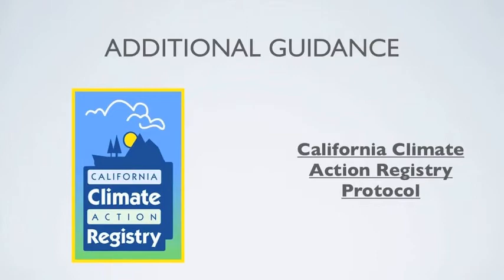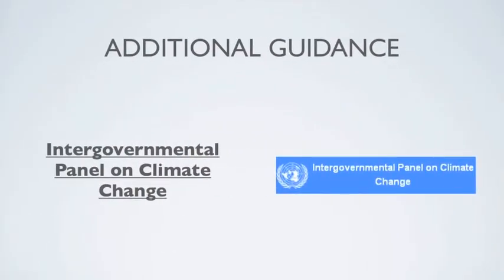Another source of guidance is the Intergovernmental Panel on Climate Change, or IPCC. The IPCC was established by the United Nations in 1988 to evaluate the risk of climate change because of human activity. One of the IPCC's main activities is publishing special reports on topics relevant to the implementation of the UNFCCC. The IPCC has developed comprehensive guidelines for the development of GHG inventories on the national level, as well as numerous methodologies for quantifying GHG emissions and removals from a variety of sectors, like agriculture and forestry.